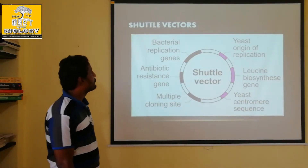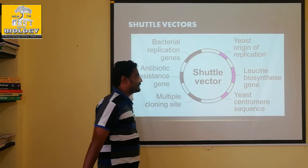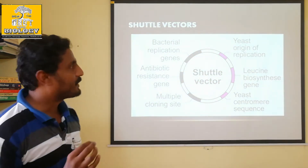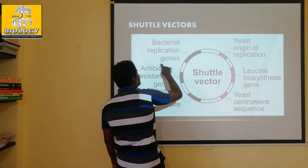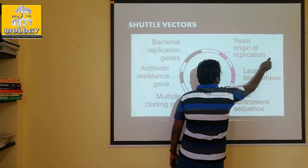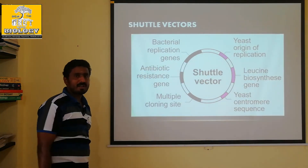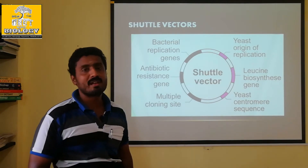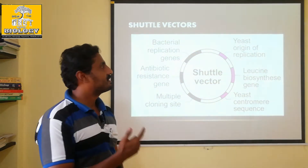What do we see in the structure? It is a plasmid structure. It contains a bacterial replication gene and a yeast replication gene. We create this circular DNA — like a phagemid, cosmid, or shuttle vector.